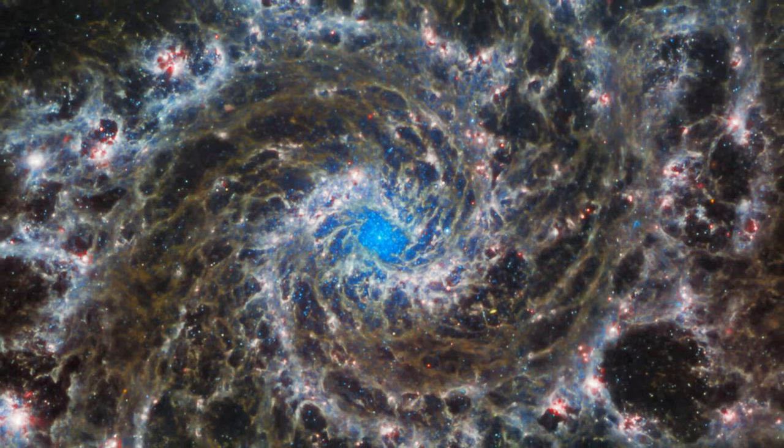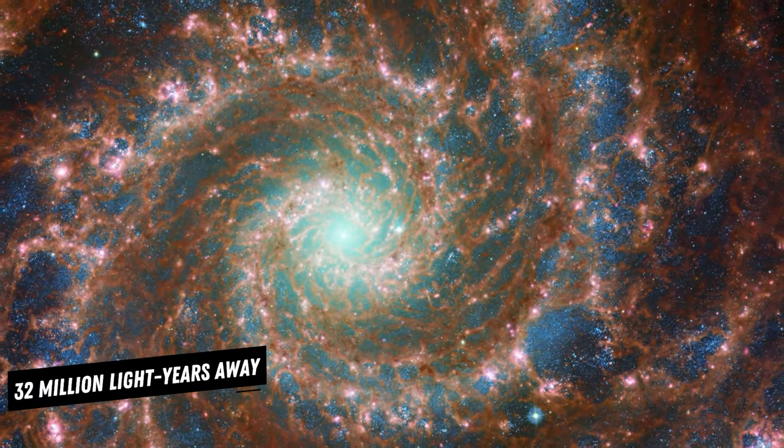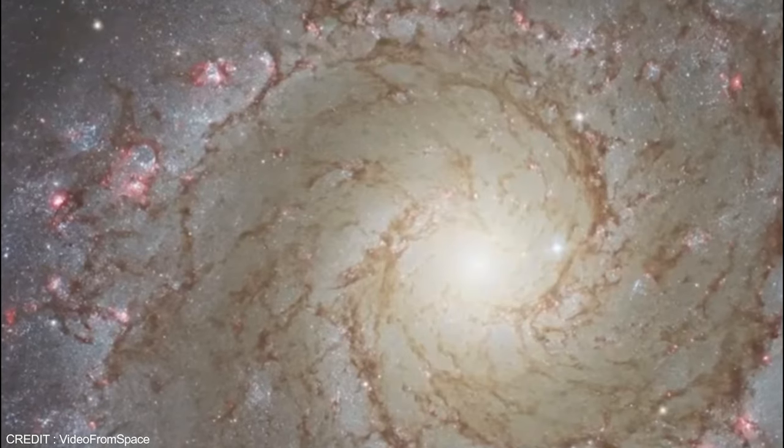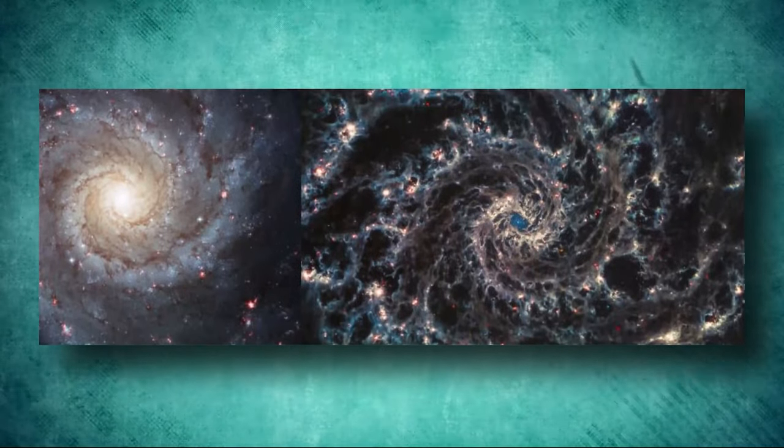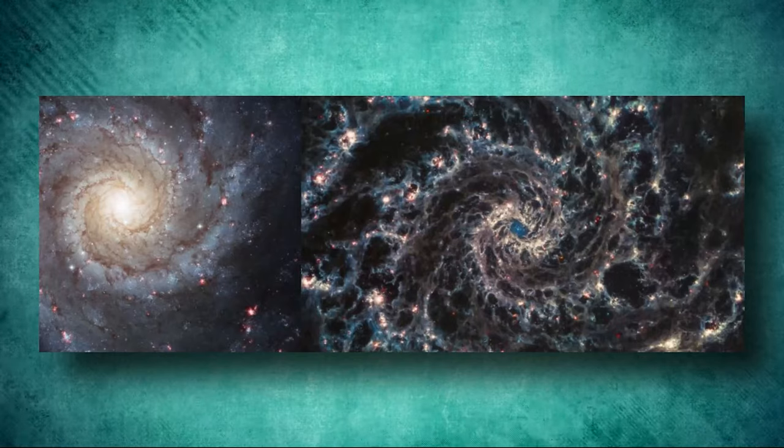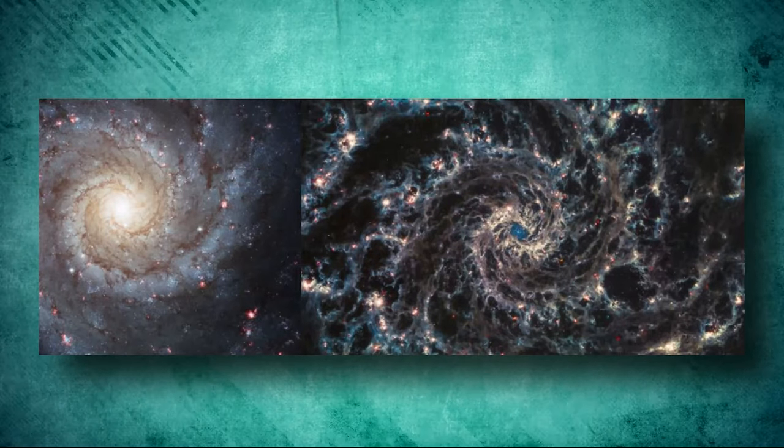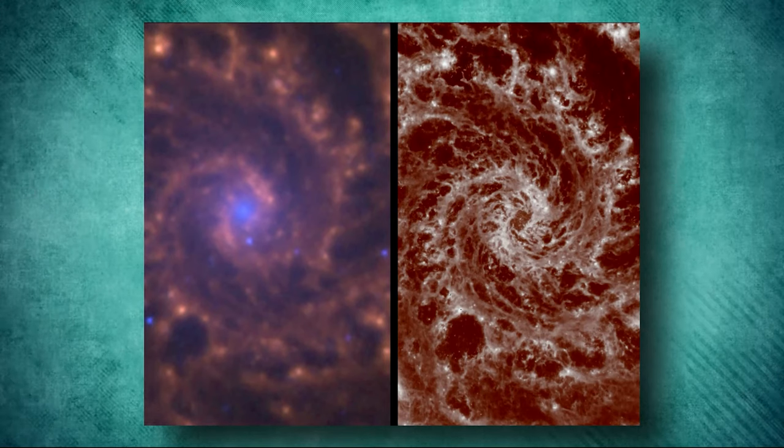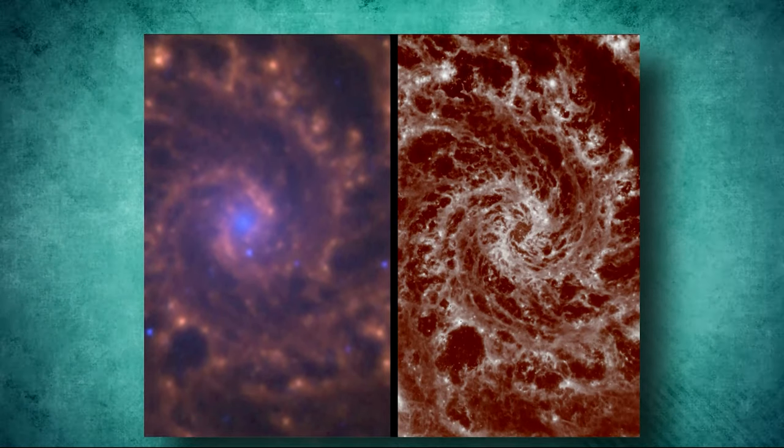A beautiful spiral galaxy called M74 was snapped. Located 32 million light-years away in the constellation Pisces, M74 is a grandly designed spiral galaxy with well-defined, prominent spiral arms. The image, captured using JWST's mid-infrared instrument, shows M74 in a new light, revealing delicate filaments of blue and pink gossamer gas and dust within the galaxy's spiral arms.